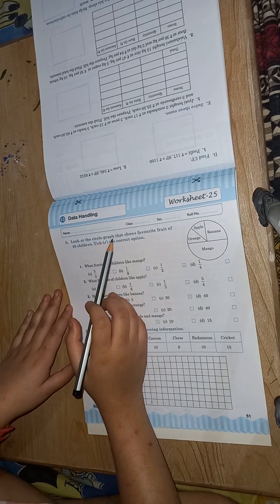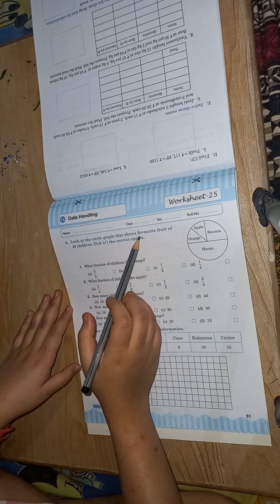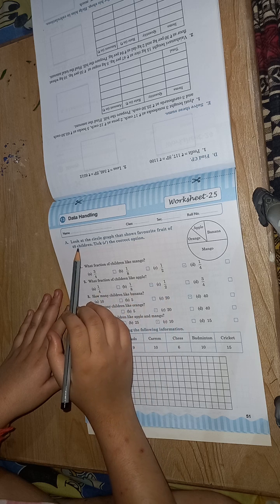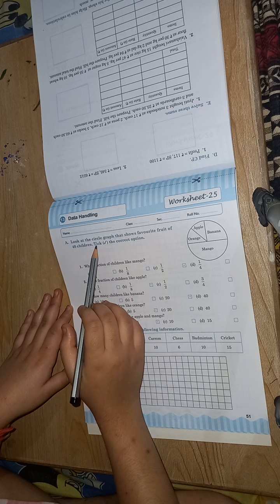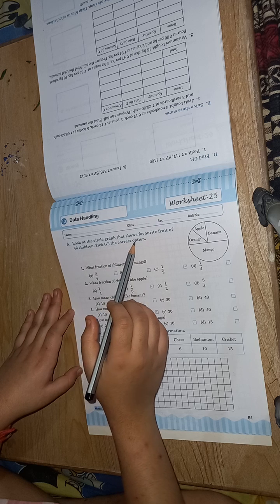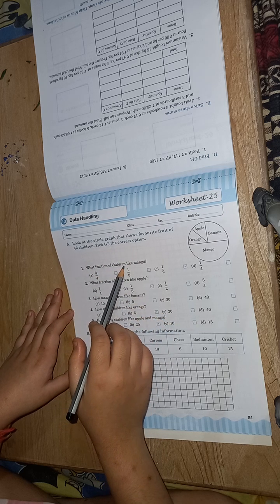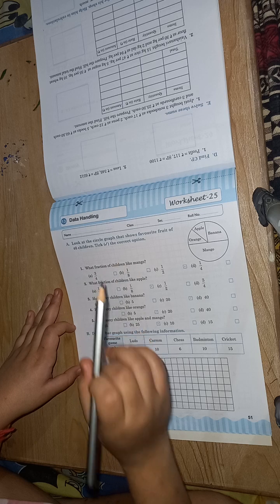Look at the circle graph that shows favorite fruit of 40 children, take the correct option. What fraction of children like mango?